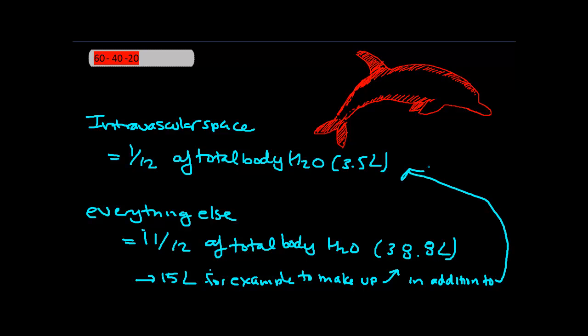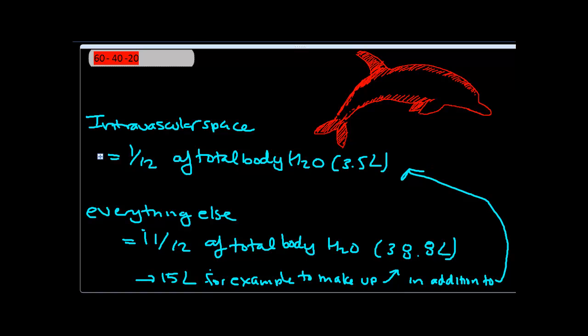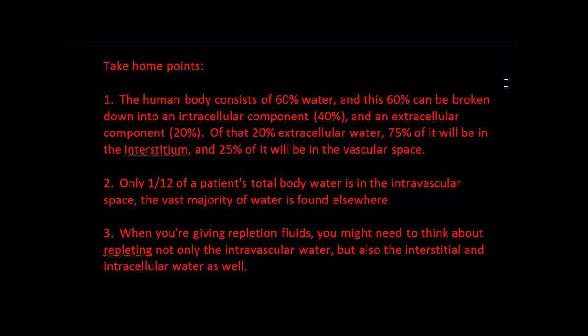It appears a little counterintuitive at first, but if you understand the 60-40-20 rule, it should now make sense. Let's get to our take-home points. First, the human body consists of 60% water, which can be broken down into an intracellular component (40%) and an extracellular component (20%). Of that 20% extracellular water, 75% will be in the interstitium and 25% will be in the vascular space.